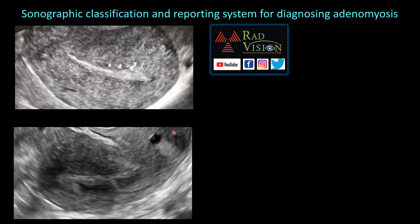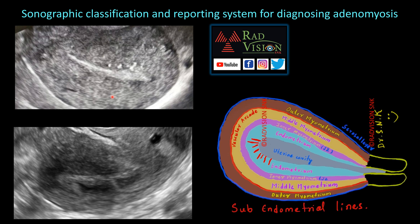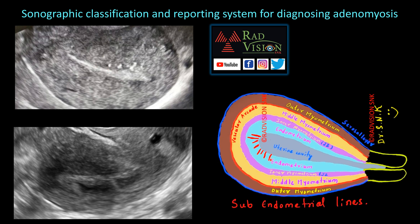Now we will see some cases with illustrations. Here you can see multiple subendometrial echogenic lines — these are the subendometrial lines.